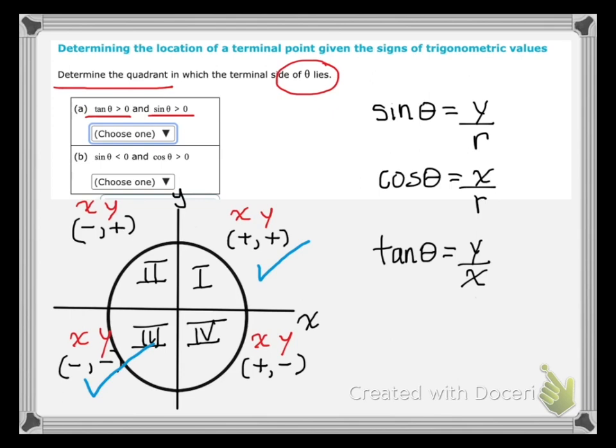And sine theta is also positive. What that really means to us, the only thing that's impacting whether it is positive or negative, is the y value. R does not have a sign, or we could say R is always positive. I would never have a negative radius in this context. So sine equals y over r means that y is positive, and y is positive here, and y is positive in the second quadrant as well.